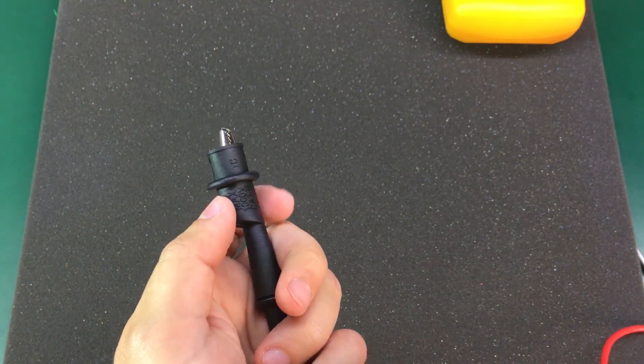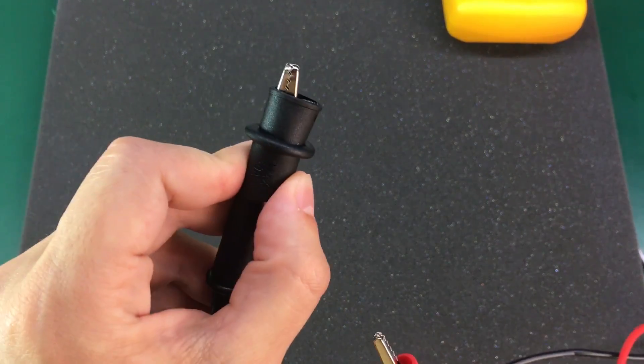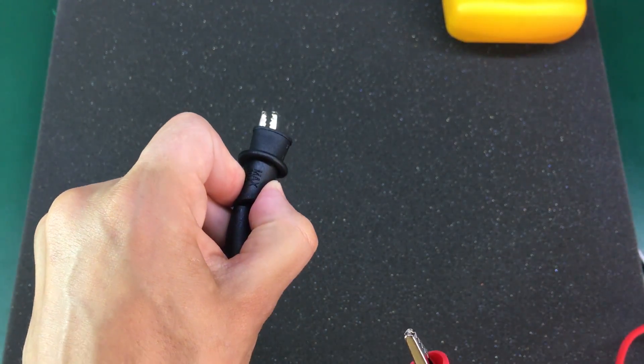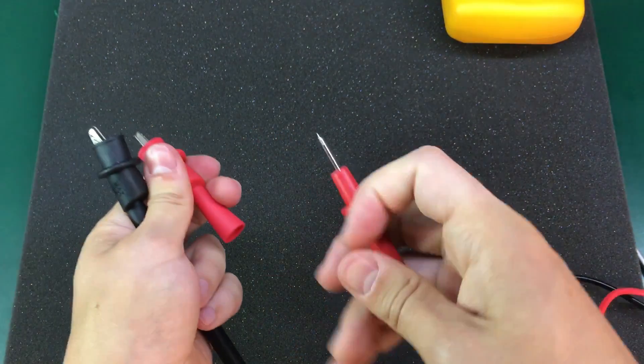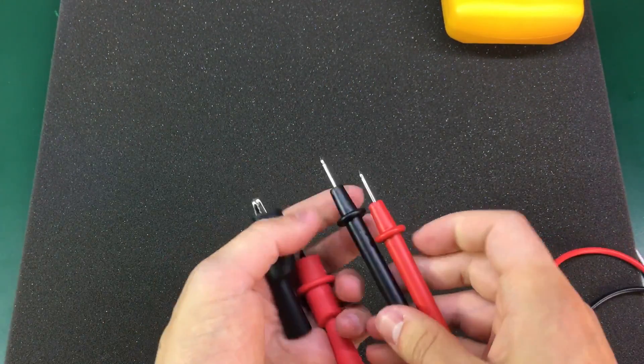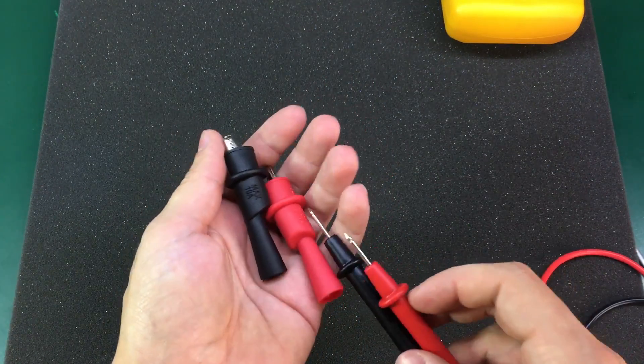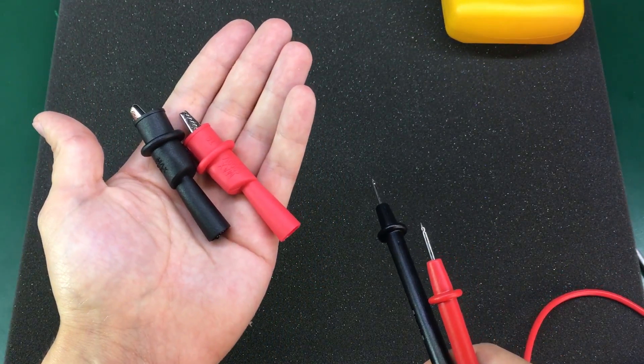Because most of the times when I am working on a circuit the ground lead is at a fixed point. So I can attach the ground lead to a fixed ground point. And then I can go in just with the positive lead and measure different voltages. So yeah, a good addition to my toolbox and I highly recommend you get a pair of these.